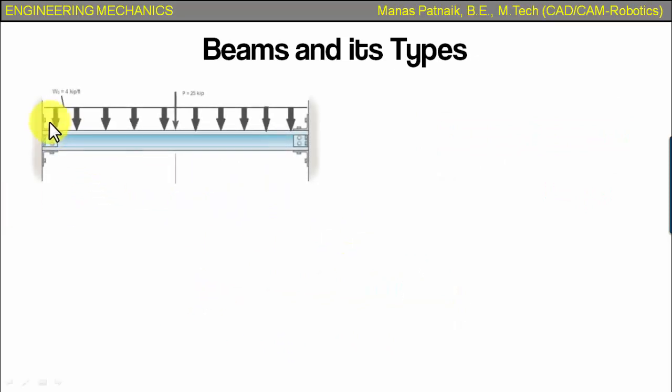Now let's move forward. Now this is going to be another one. This is what you call a fixed beam. The definition is pretty simple. Both the ends of the beam are fixed. And that's why we refer to this as a fixed beam.